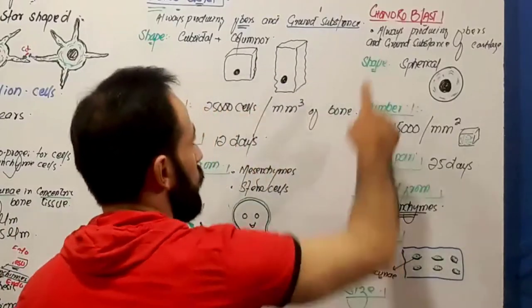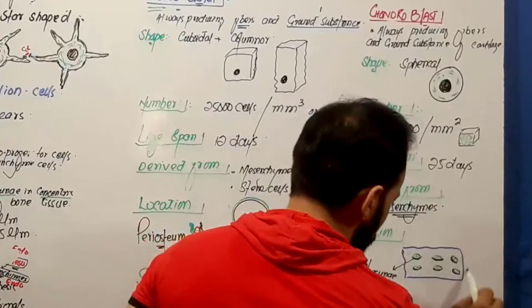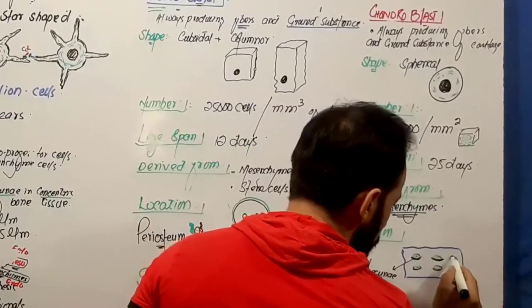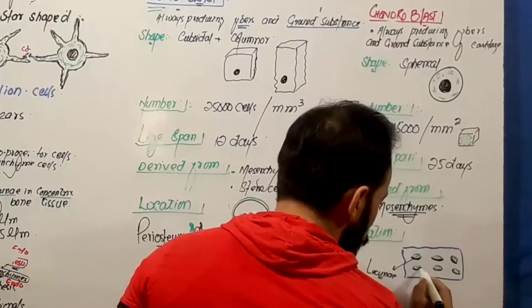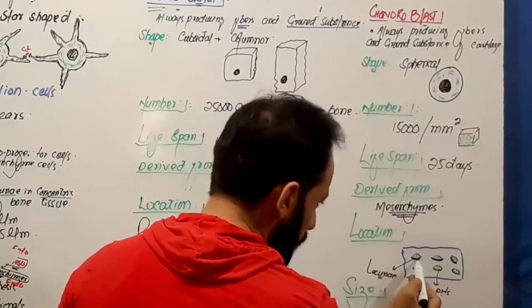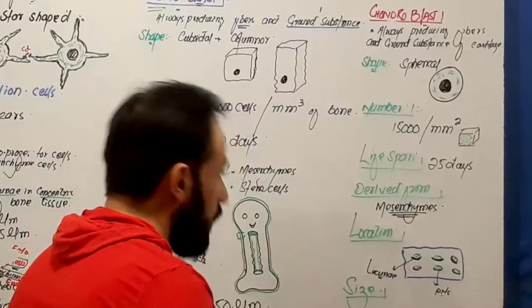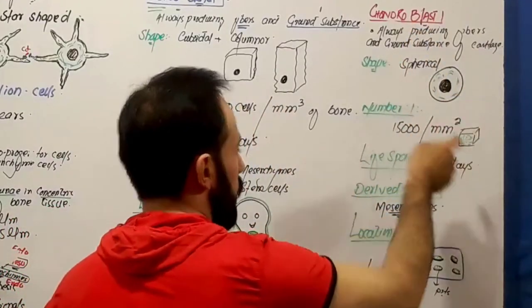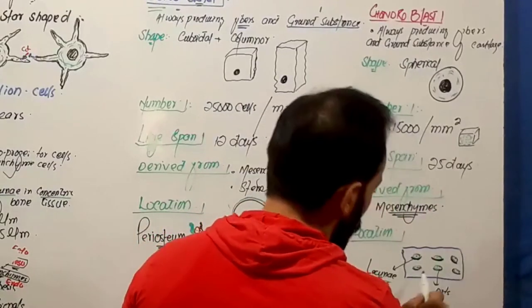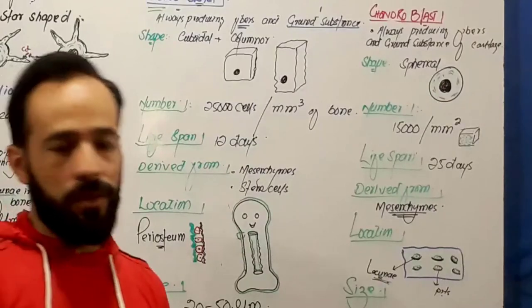What is the location of these chondroblasts? If you take a piece of cartilage and look at the ground substance, there are certain areas which are a little bit pit-like. In these pits the cells are found. Both chondroblasts and chondrocytes are found in the lacunae of the ground substance of this cartilage, so they are present in the lacunae.